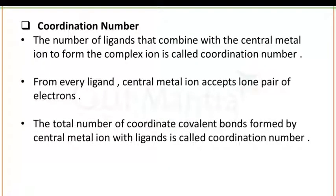Next is the coordination number — the number of ligands that can combine with the central metal ion to form a complex ion. From every ligand, the central metal ion accepts a lone pair of electrons, and the total number of coordinate covalent bonds formed by the central metal ion with ligands is known as the coordination number. Simply, the total number of ligands present in a complex compound tells you the coordination number.